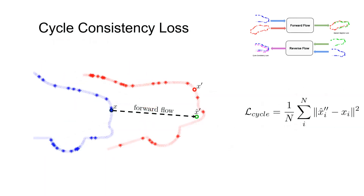To counter this local minima, we force the mapping to be invertible with our cycle consistency loss. Given the projected point cloud produced by our forward flow, we compute the reverse flow for each point back to its original time frame. As each point has a known starting position in this frame, we can use the distance induced by the cycle to further supervise our training.